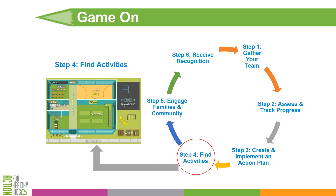Some schools use Game On as their go-to framework — each year starting at step one and working their way through the steps. Other schools use it to complement existing programs, coming to Game On when they're looking for more ideas or resources to support particular activities — going straight to step four and clicking on additional activities. Action for Healthy Kids offers three to four online trainings each month to complement some of the activities in Game On. Think about whether to use Game On as a formal six-step framework or simply as an additional resource to support your work.